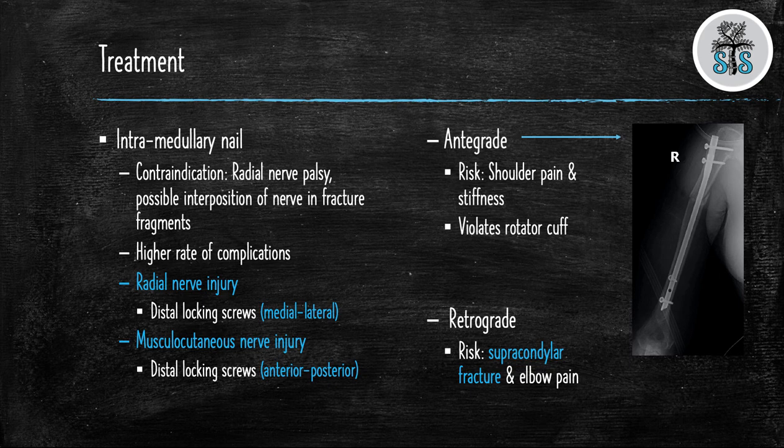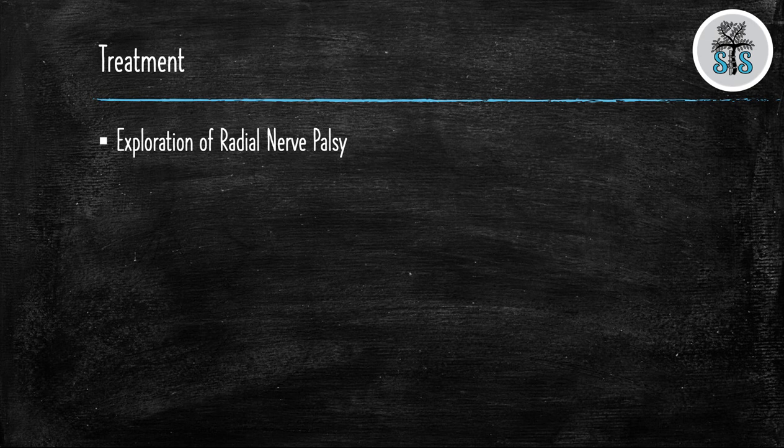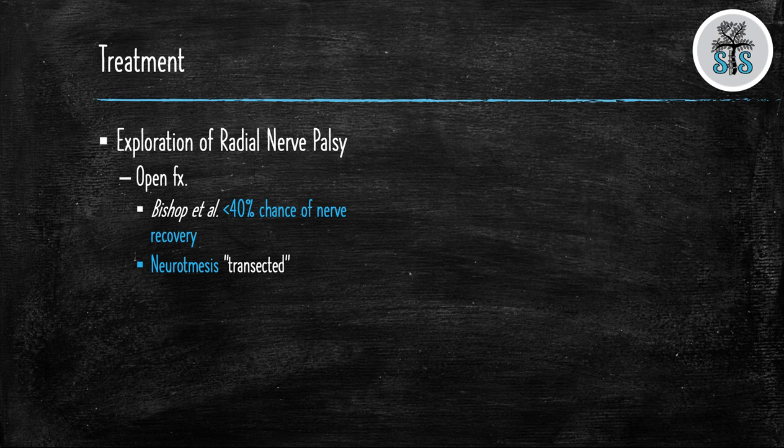So we discussed earlier in this presentation the relatively high incidence of radial nerve palsy. There are some specific indications on when you should explore a radial nerve palsy and when you should not. Open humeral shaft fractures with a radial nerve palsy is an indication to explore the radial nerve. A study by Bishop found that the radial nerve had an increased risk of being transected in open humeral shaft fractures. They found that when the radial nerve was not explored the radial nerve had a recovery rate less than 40%.